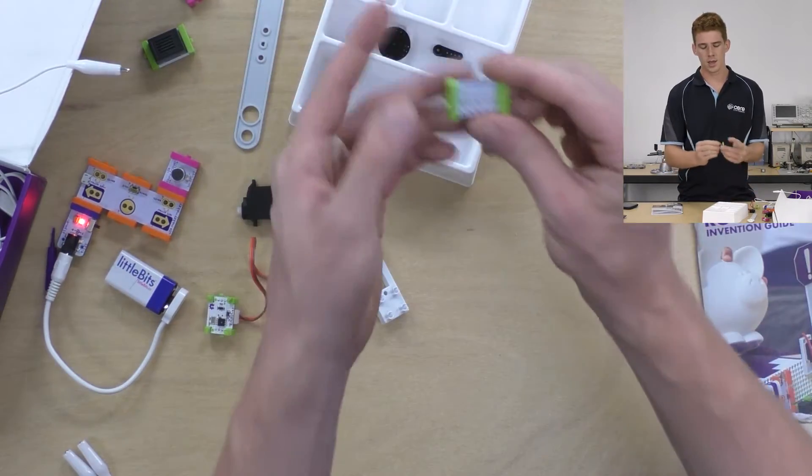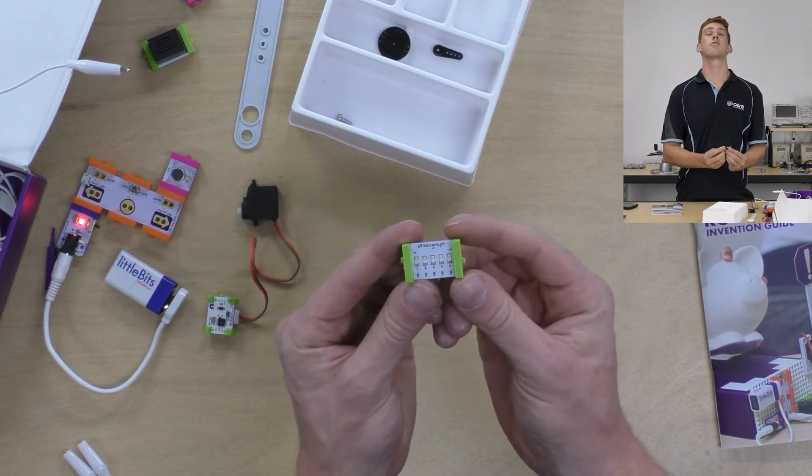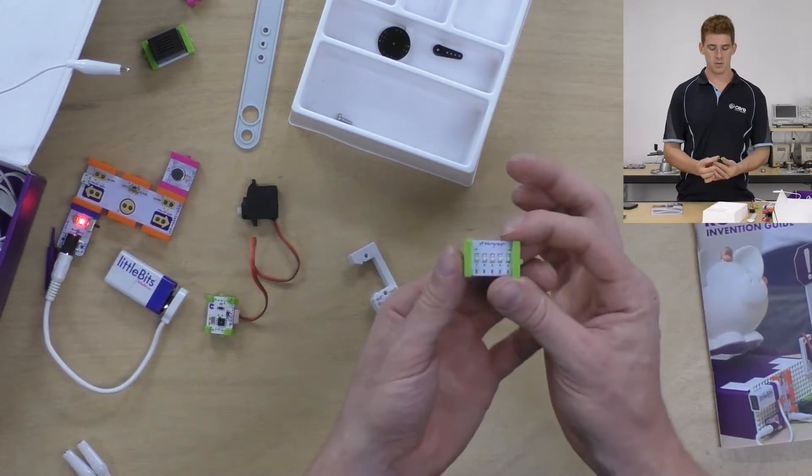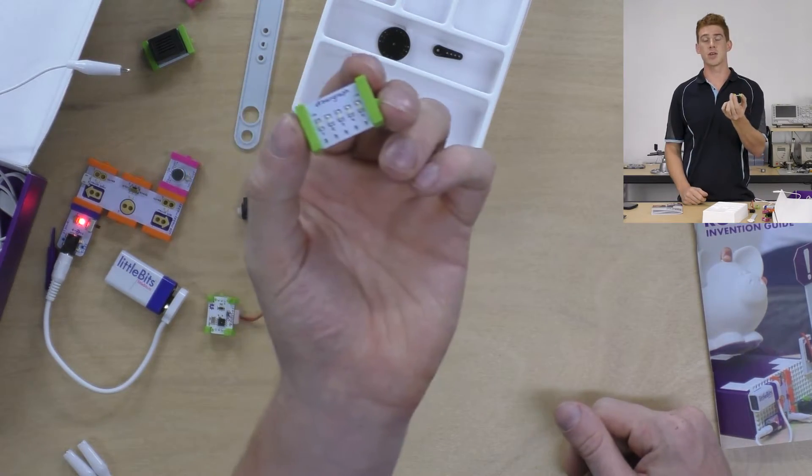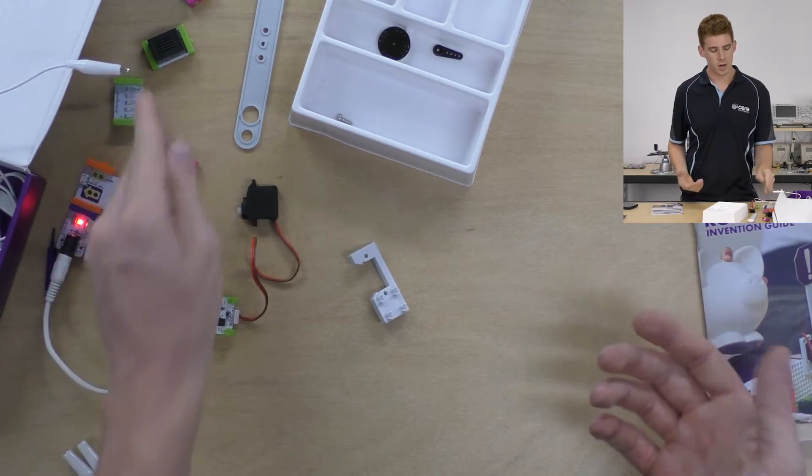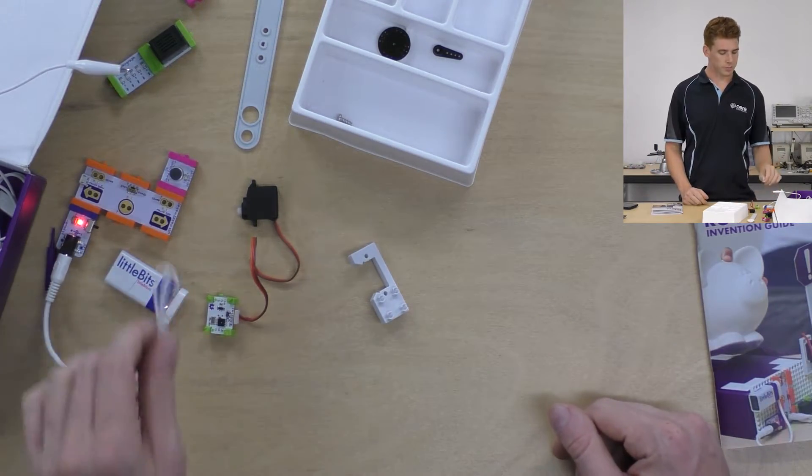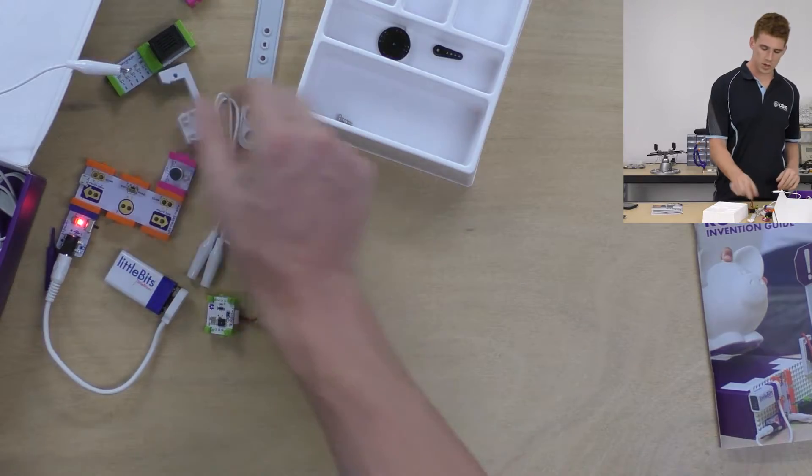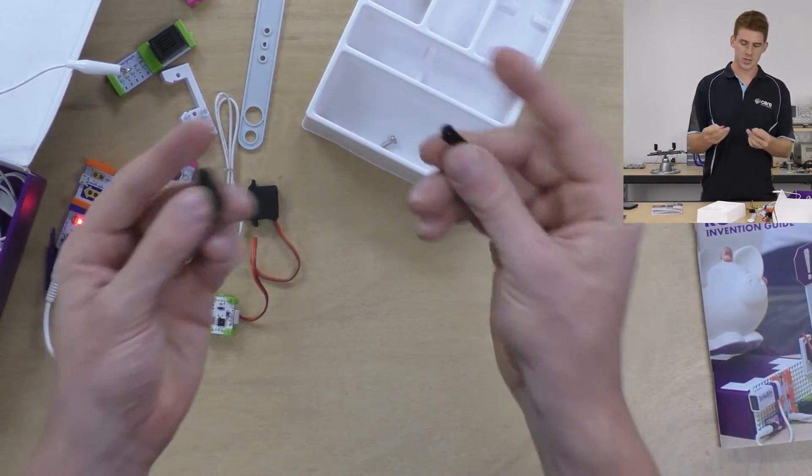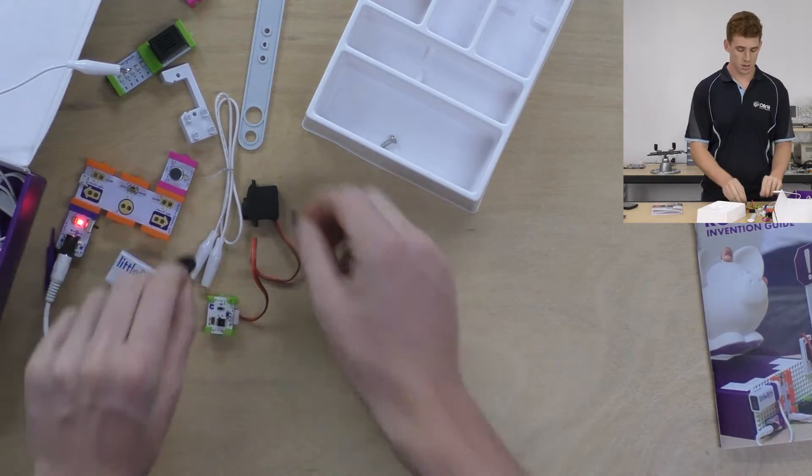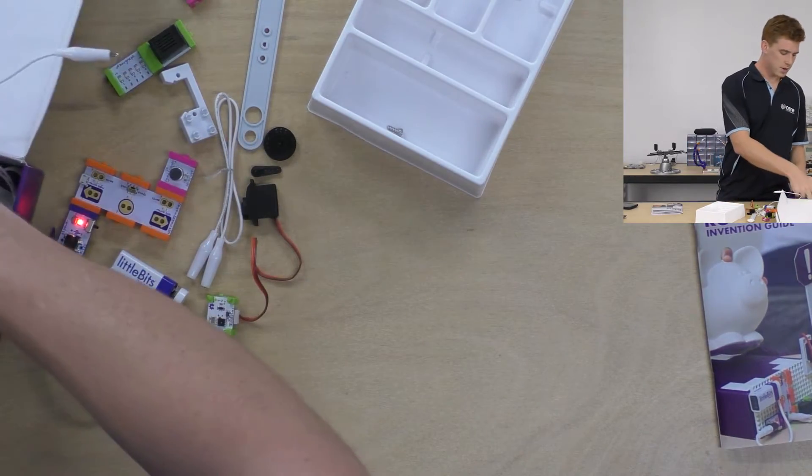And finally, everyone's favorite, the bar graph bit, really simple to use. It's got five LEDs along the front, and you can just increase the power level, and it will increase how many LEDs are on. So it's really good for projects that glow, and what have you. We've got a few more accessories. So we've got a couple of more servo accessories that just come with your kit, which is always good to have.